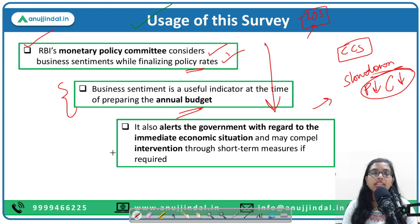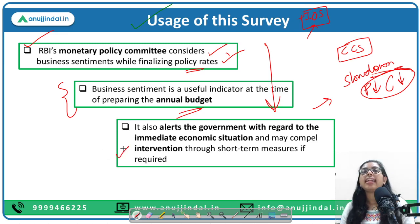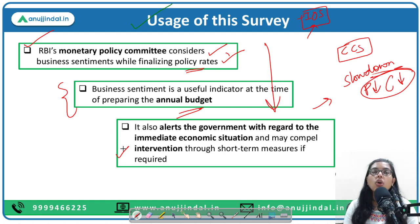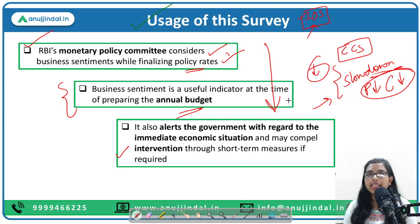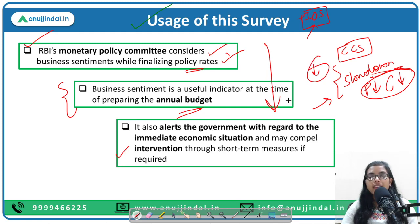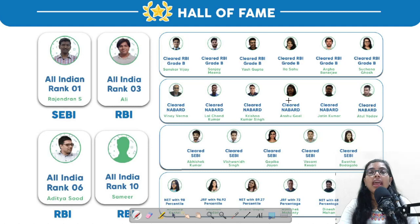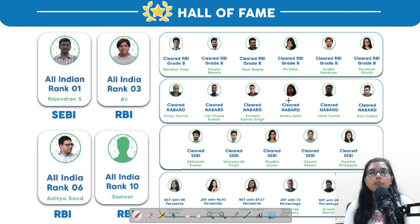RBI can intervene in the short term, and timely actions can be taken to reduce the effect of slowdowns and recession. This was all about the Industrial Outlook Survey. In the coming sessions, we will also cover other important topics. Take care and bye-bye.